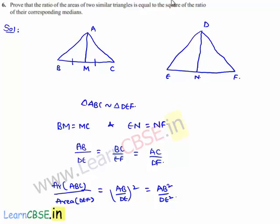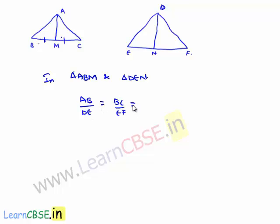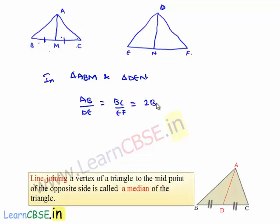Now, considering the two triangles ABM and DEN, from the first triangle similarity — that is ABC similar to DEF — we get AB/DE = BC/EF. Since BC equals BM plus MC, and BM equals MC, we can write BC as 2BM. Similarly, EF equals EN plus NF, so EF equals 2EN.